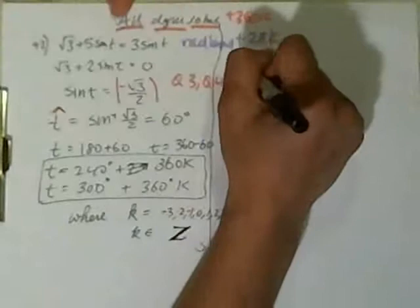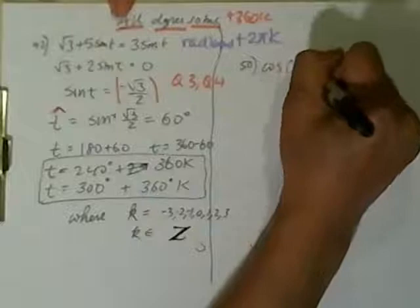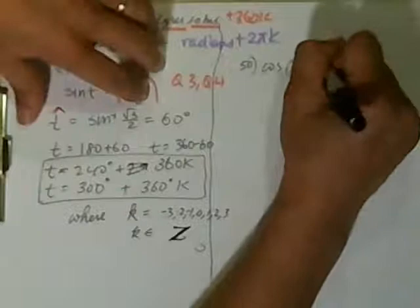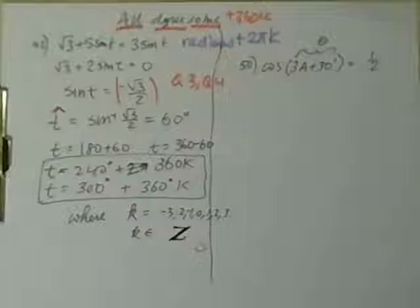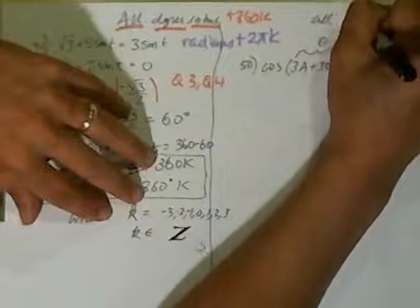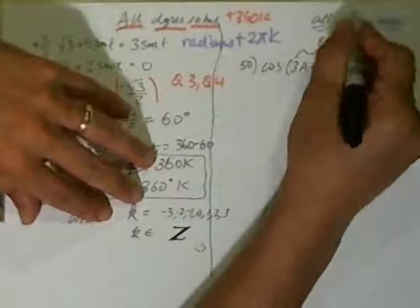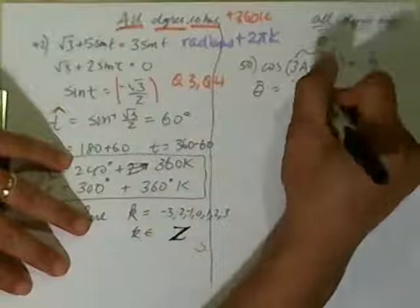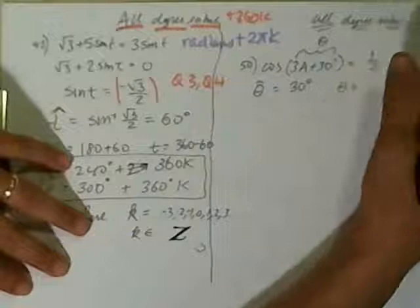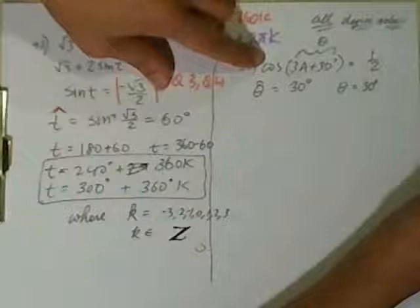Cosine of 3a plus 30 degrees, and that's equal to 1/2. And I'm going to call this theta hat at first because I have no idea. Cosine of 1 angle is equal to 1/2. Oh, let's read the directions. Find all degree solutions. Ooh, Mufasa. All degree solutions. So, when I have to add a plus 360K at the end. Cosine of 1 angle is equal to 1/2. Theta hat is equal to cosine of 30 degrees is equal to 1/2. That means theta is equal to 30 degrees, and cosine is positive in quadrant 1 and 4. So, it's going to be 330 degrees.